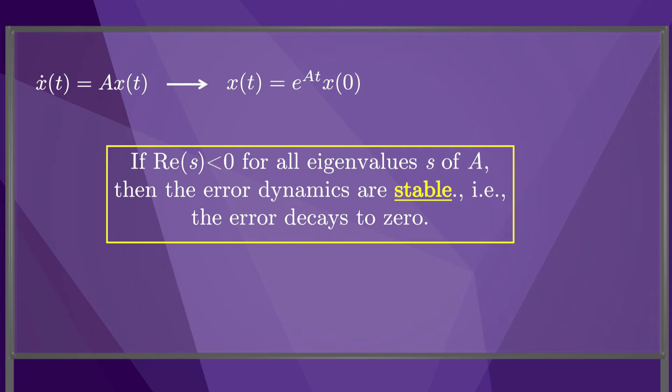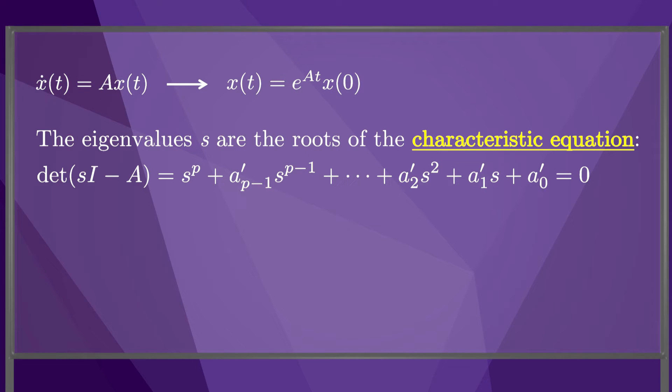The eigenvalues S of A are given by the roots of the characteristic equation of A, the determinant of S times the identity matrix minus A equals zero. Therefore, we often refer to the eigenvalues as roots.